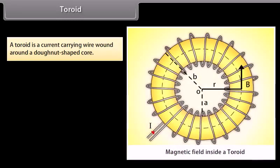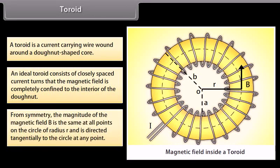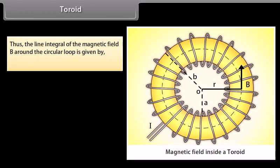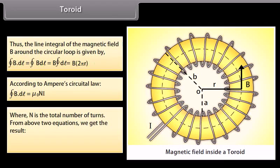A toroid is a current carrying wire wound around a donut-shaped core. An ideal toroid consists of closely spaced current turns such that the magnetic field is completely confined to the interior of the donut. From symmetry, the magnitude of B is the same at all points on the circle of radius R and is directed tangentially. The line integral of B around the circular loop is B times 2 pi R. By Ampere's Circuital Law, closed integral of B dot dL equals mu_0 NI. From these two equations, B equals mu_0 NI divided by 2 pi R.